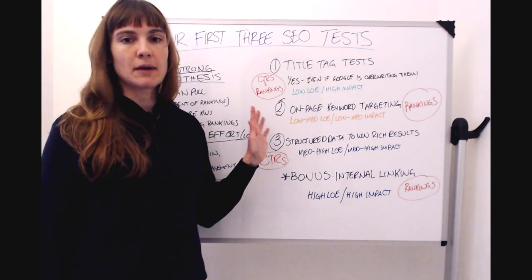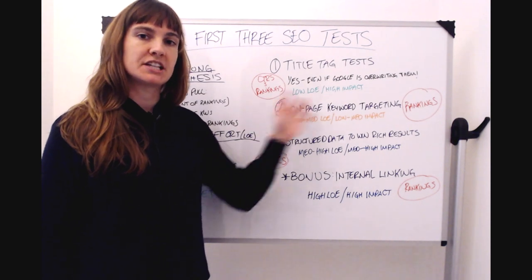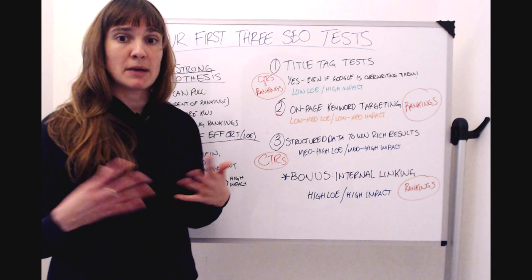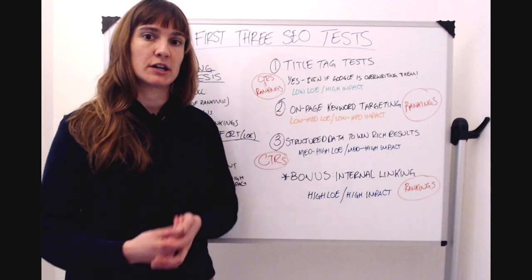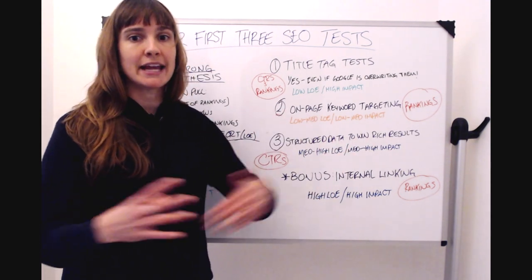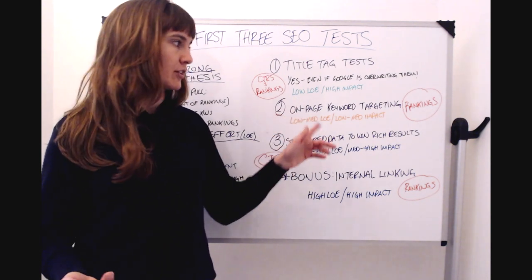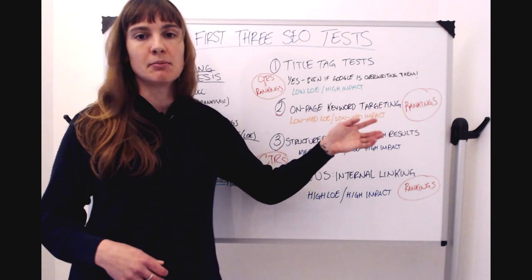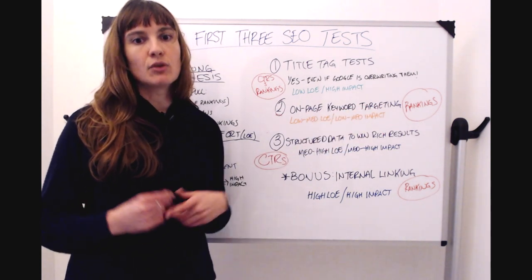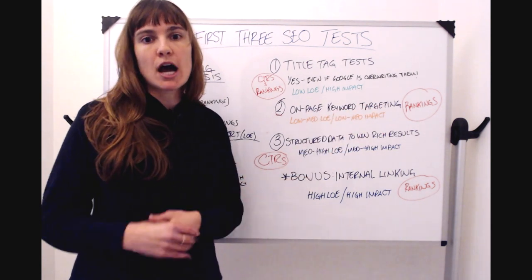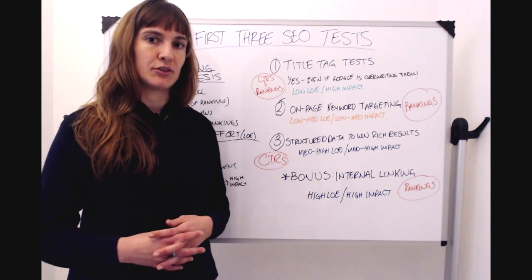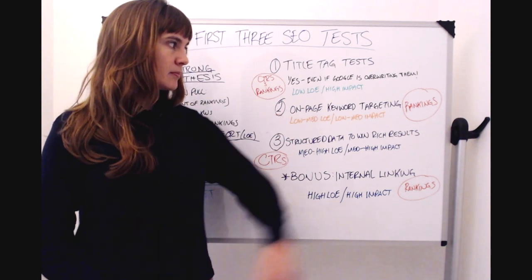Next, you want to run on-page keyword targeting tests. So things that are changing the keyword targeting maybe to something like a higher search volume keyword. This can be adding content. This can be updating headings. H1 changes fall into this category. I put these as low to medium impact and low to medium level of effort. So generally, still pretty easy to run. Not going to cause as big swings as title tags, but we definitely want to prioritize those in early on, targeting our rankings.